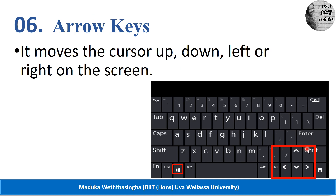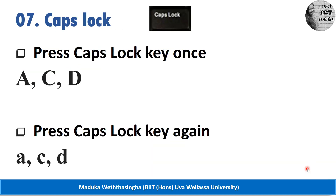Then the arrow keys. Arrow keys are used to move the cursor up, down, left, and right. Next is the caps lock key. The caps lock key is used to type capital and simple letters. When you press caps lock once you can write capital letters, and when you press it again you can write simple letters.